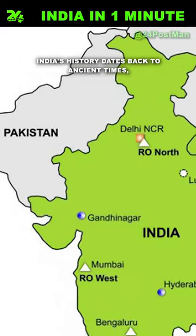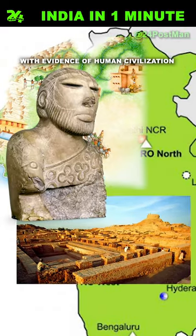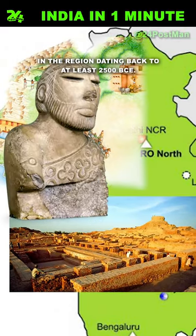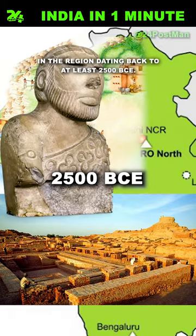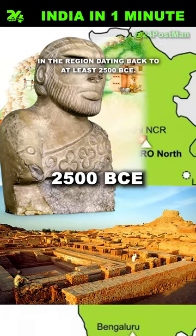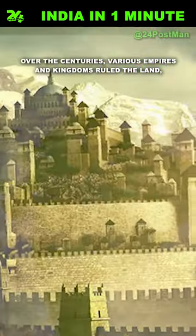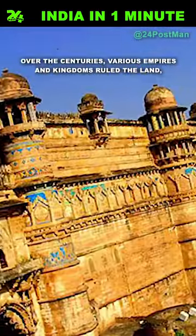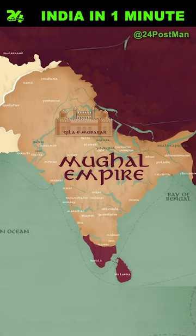India's history dates back to ancient times, with evidence of human civilization in the region dating back to at least 2,500 BCE. Over the centuries, various empires and kingdoms ruled the land, including the Mauryan, Gupta, and Mughal empires.